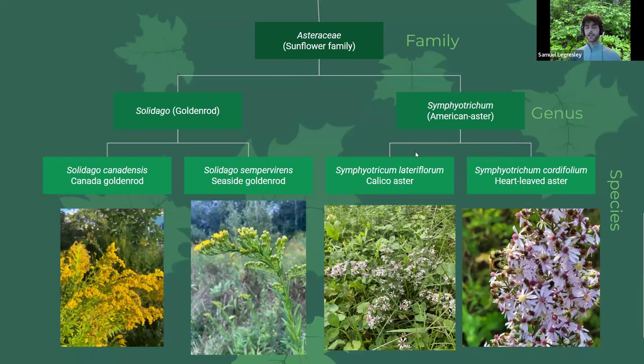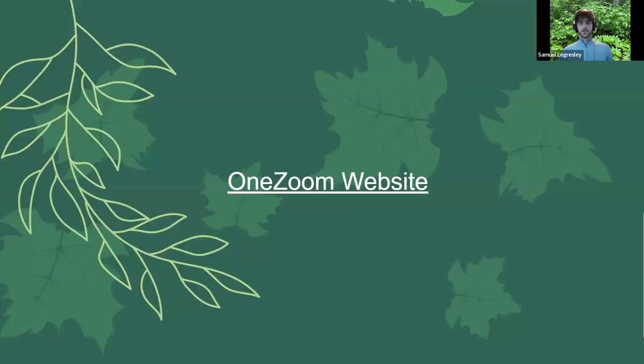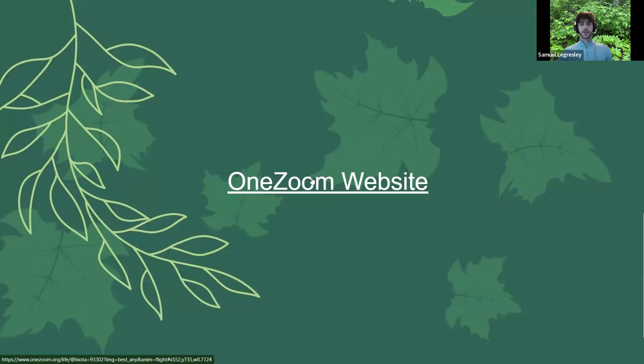Why is it important to know the Latin names? Because the Latin names give you a blueprint of what you need to identify species. We're going to look at the OneZoom website, which is basically a way to see all the species in the world — humans, plants, everything. There are a lot of different species on there. Just try to see how complex it is and how science has simplified it a lot for us.